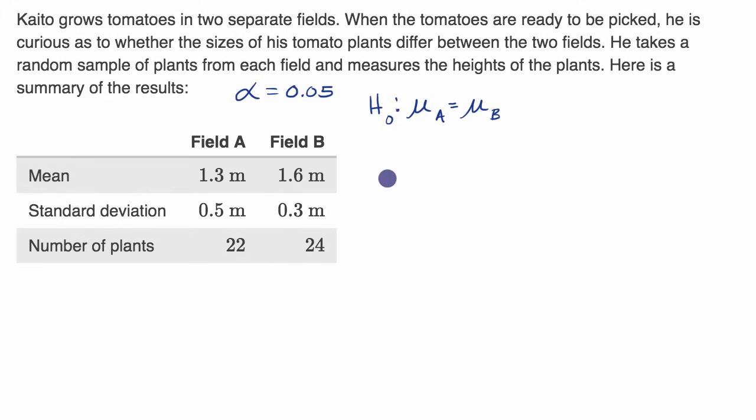Now what about our alternative hypothesis? He wants to see whether the sizes of his tomato plants differ between the two fields. He's not saying whether A is bigger than B or whether B is bigger than A. So his alternative hypothesis would be around his suspicion that the mean of A is not equal to the mean of B, that they differ.